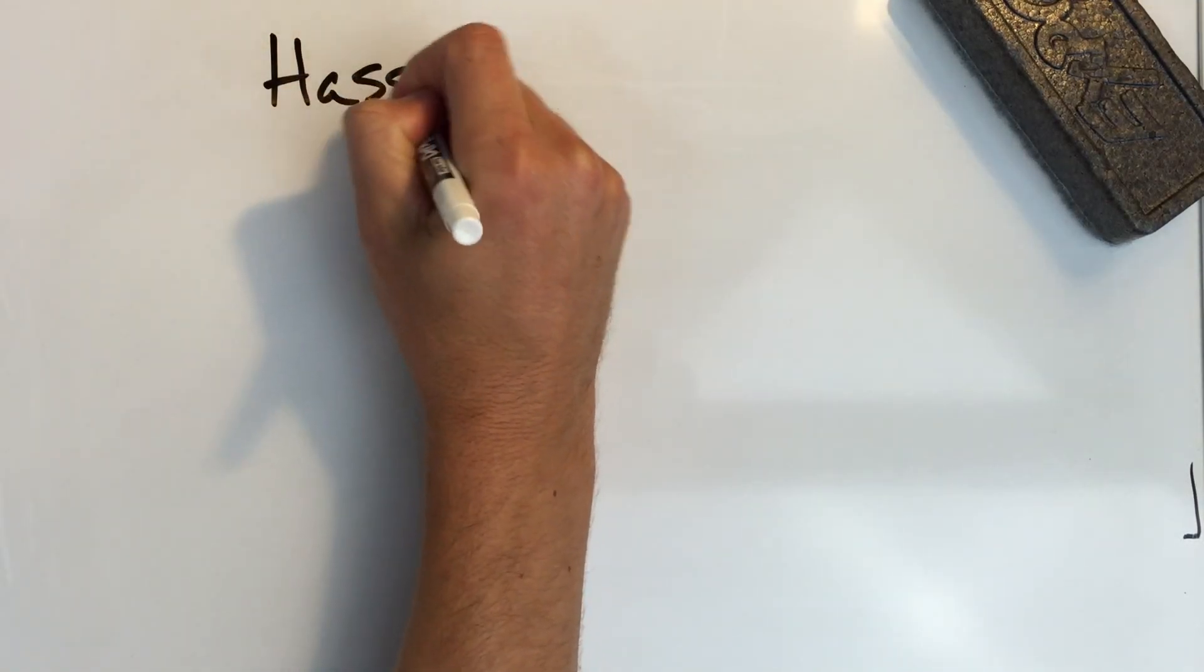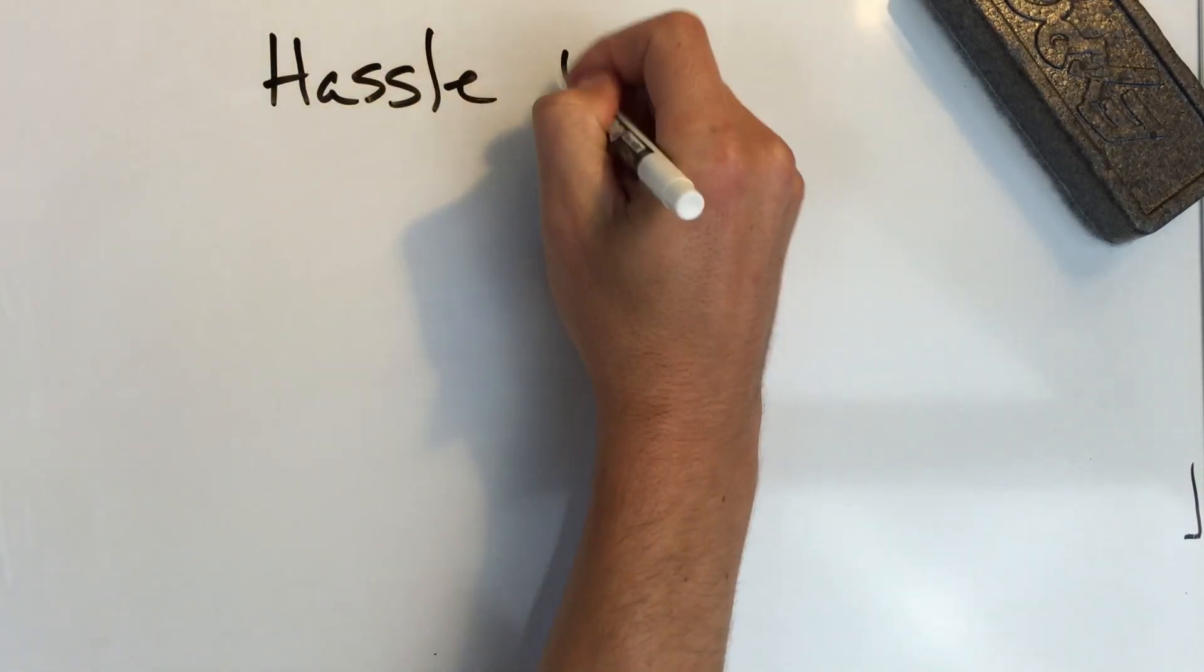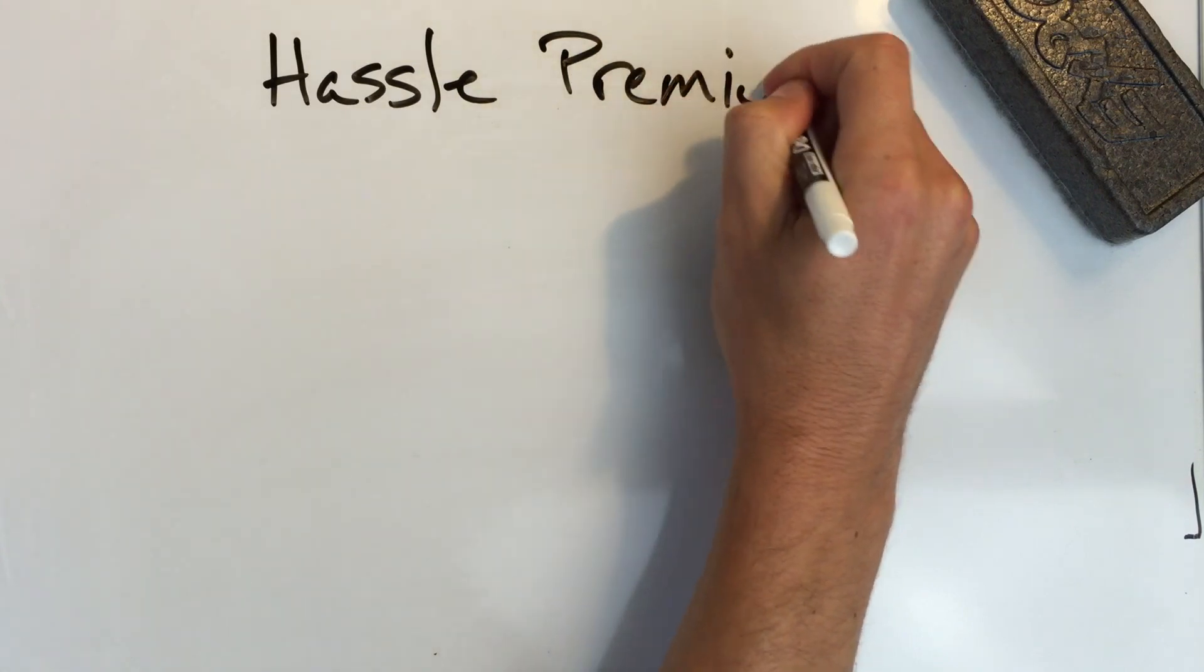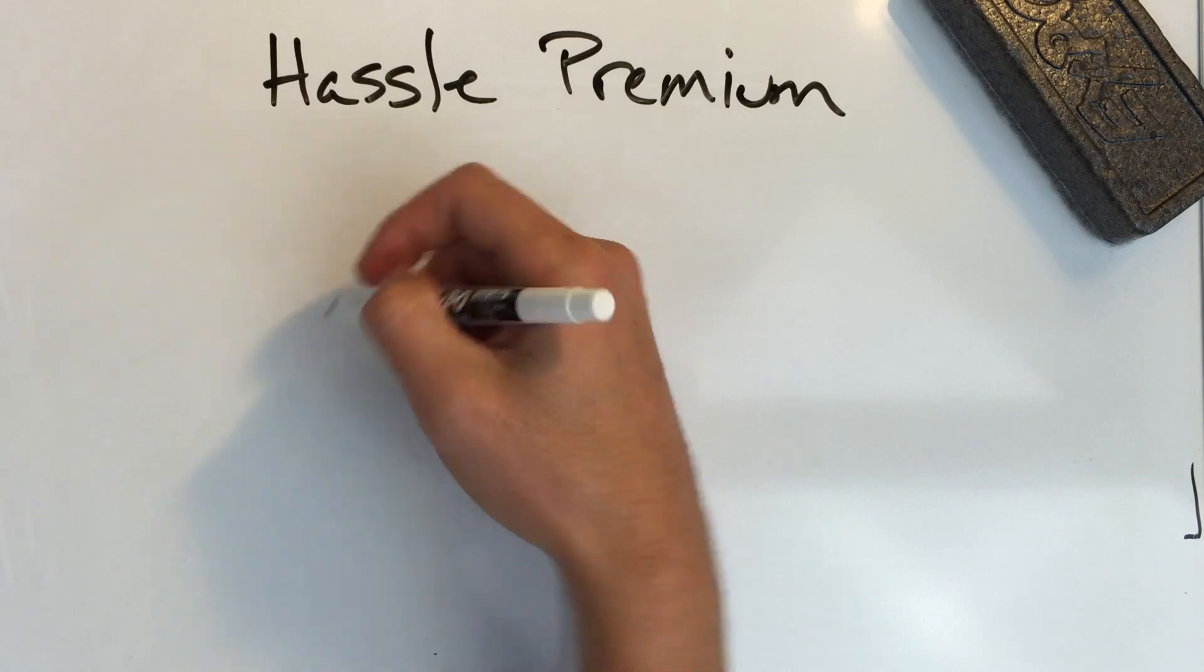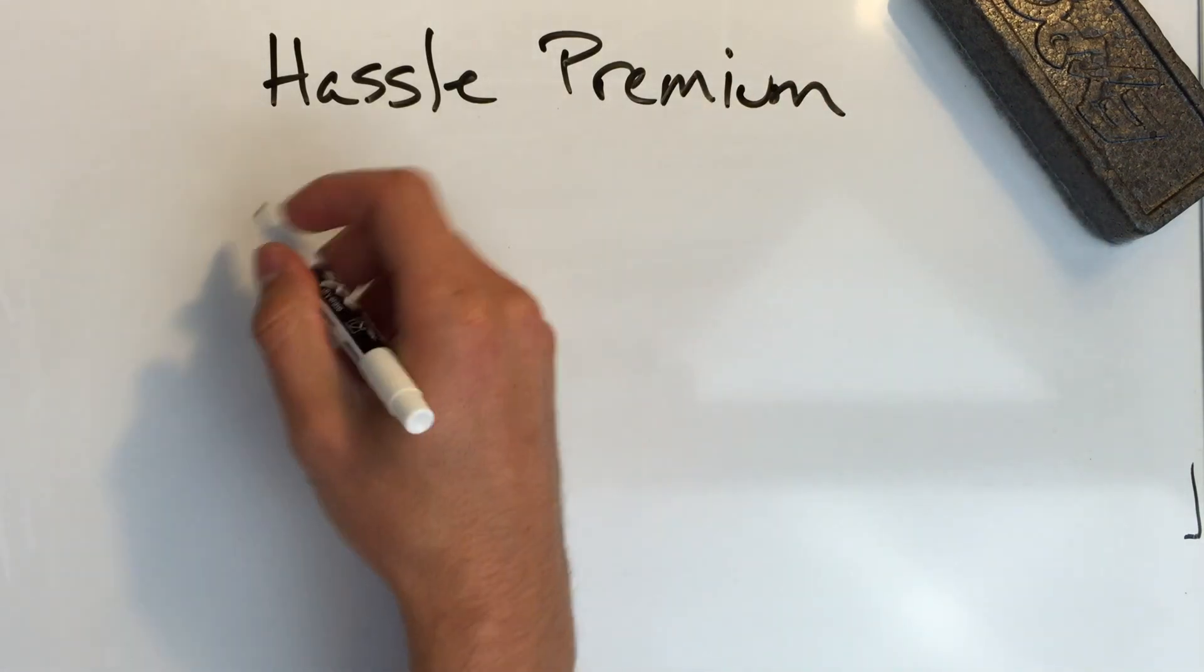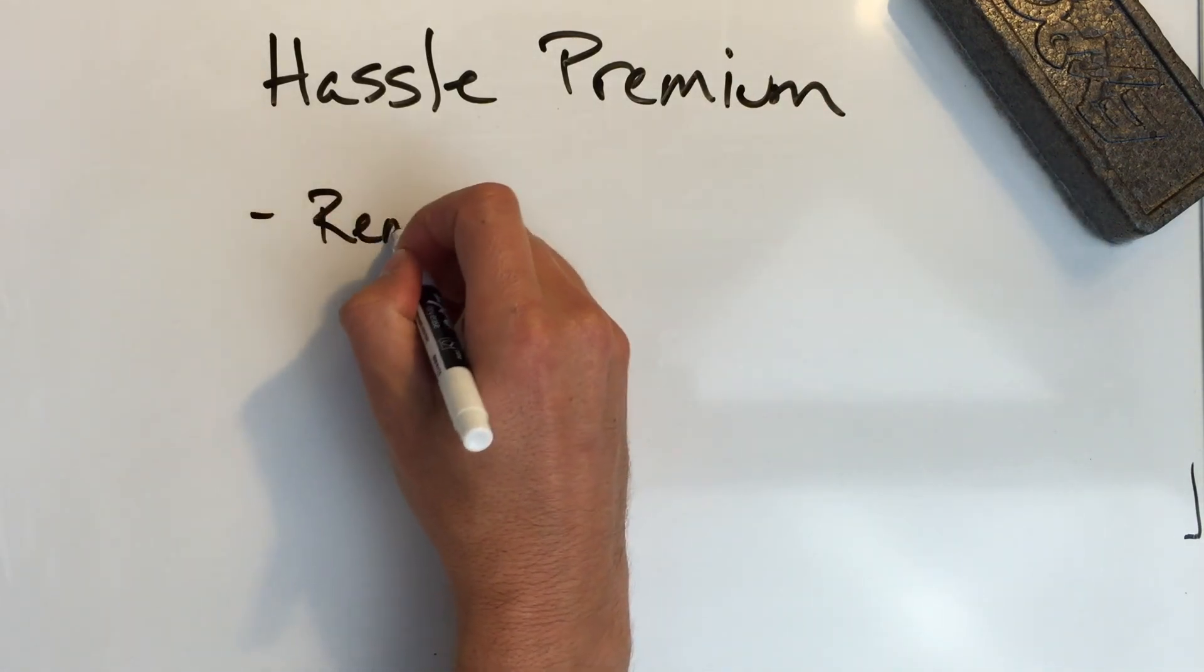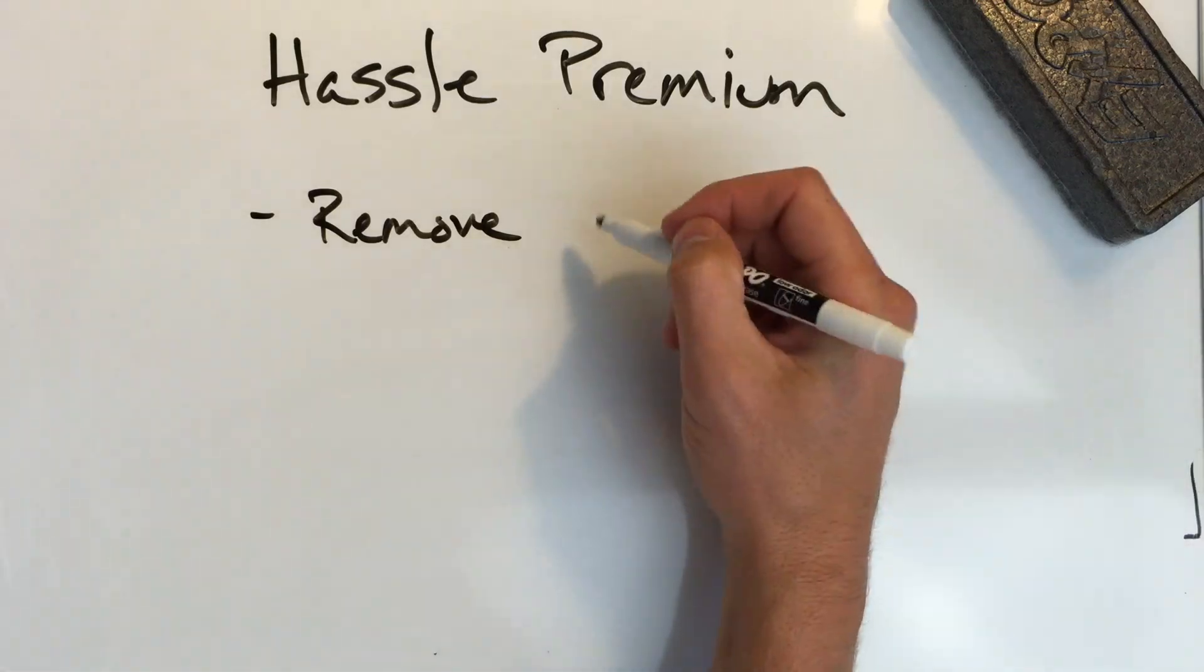This section is called Hassle Premium and it's going to be a quick one. Essentially, wherever there's a hassle, there's an opportunity for a business. There's an opportunity to provide value. You remove the hassle by doing a service for someone.